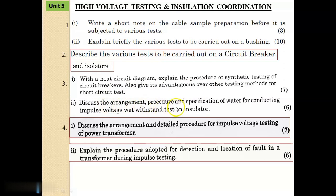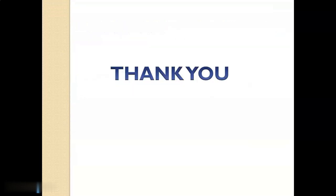Discuss the arrangement, procedure, and specification of water for conducting an impulse voltage withstand test on an insulator. Question No. 4: Discuss the arrangement and detailed procedure for impulse voltage testing of a power transformer — this is very very important. Also explain the procedure adapted for detection and location of a fault in a transformer during impulse testing. Dear students, while listening to this lecture you can understand how the marks are split and how the High Voltage Engineering paper is fully provided with split-up questions. Good luck. Thank you all.